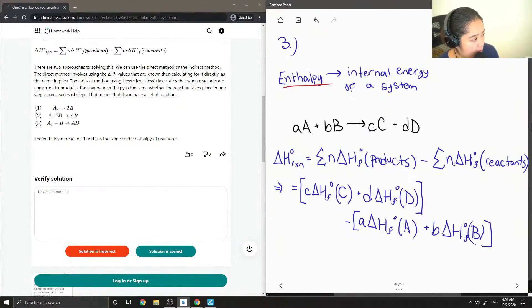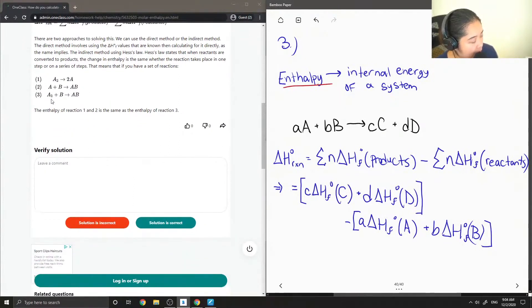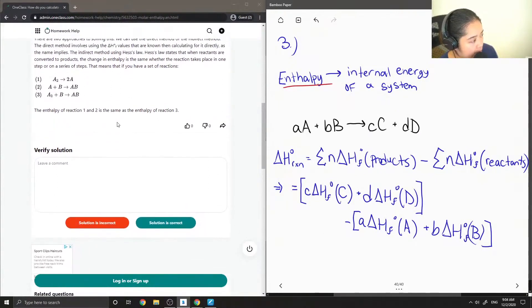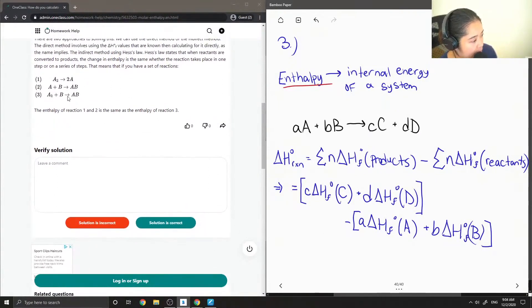So first is the bond dissociation of A2 to make 2A. The second step is A plus B to make AB. And then they have the final step. So step 2 is like an intermediate where A2 plus B makes AB. So if we were to cross out anything that is the same on both sides, then we end up getting reaction 3. They say here the enthalpy of reaction 1 and 2 is the same as the enthalpy of reaction 3.